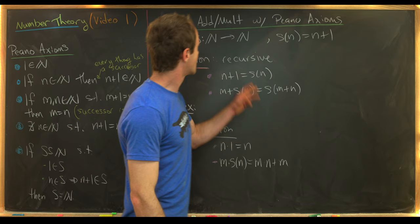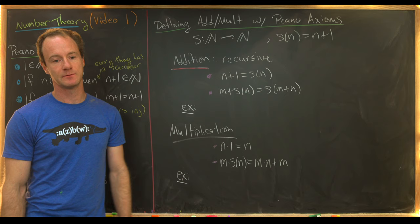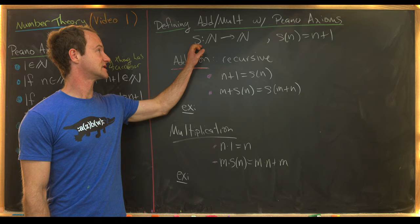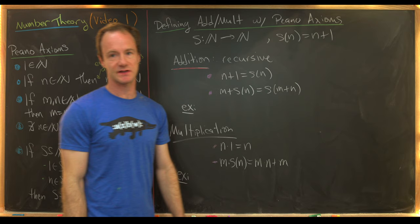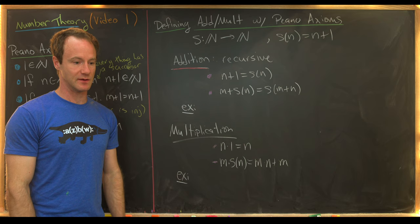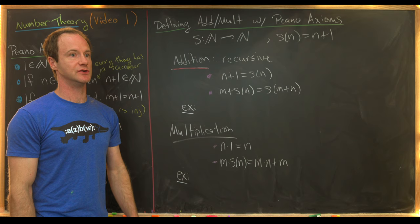We can actually define addition and multiplication via these axioms. We start with a successor function — a function S from the natural numbers to the natural numbers — notated as S(n) equals n plus one. We don't know how to add natural numbers yet or multiply natural numbers yet, but what we do know how to do is get to the next natural number via the successor function.